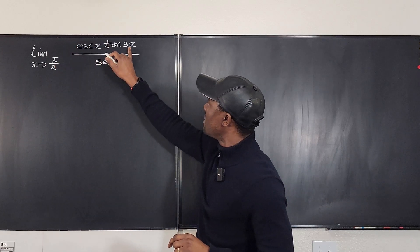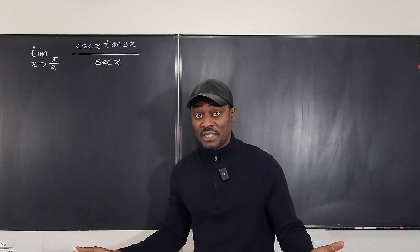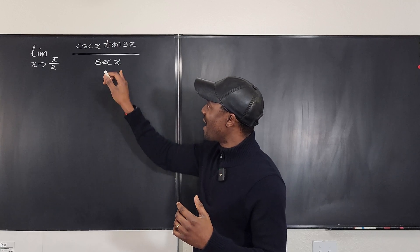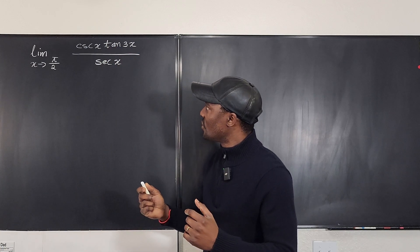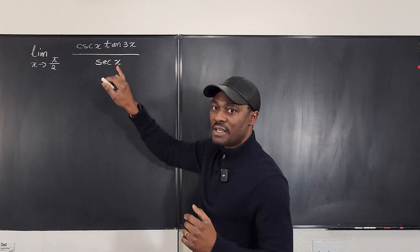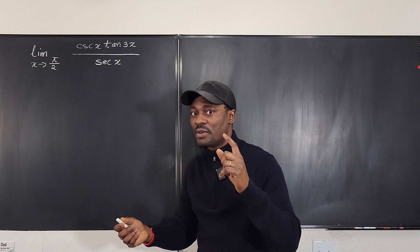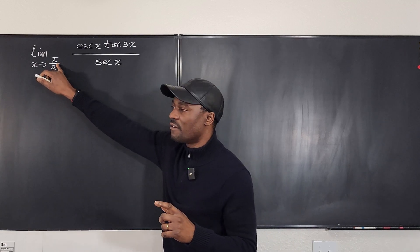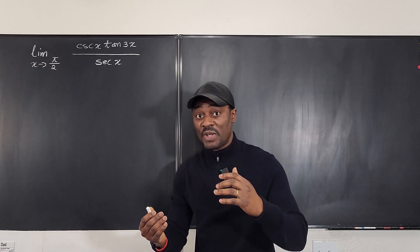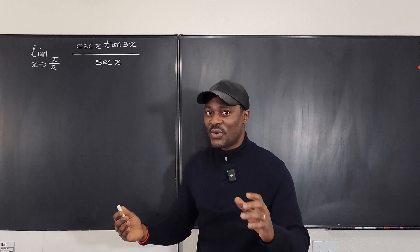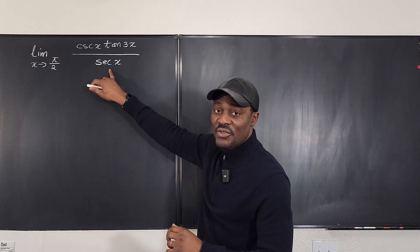If you plug in π/2 for 3x, you get 3 times π/2, which is 270 degrees, and we know that tangent is undefined at that point — so you have 1 times infinity. Down here, secant x is 1 over cosine x, and cosine of π/2 is 0, so secant is also undefined, which is infinity.